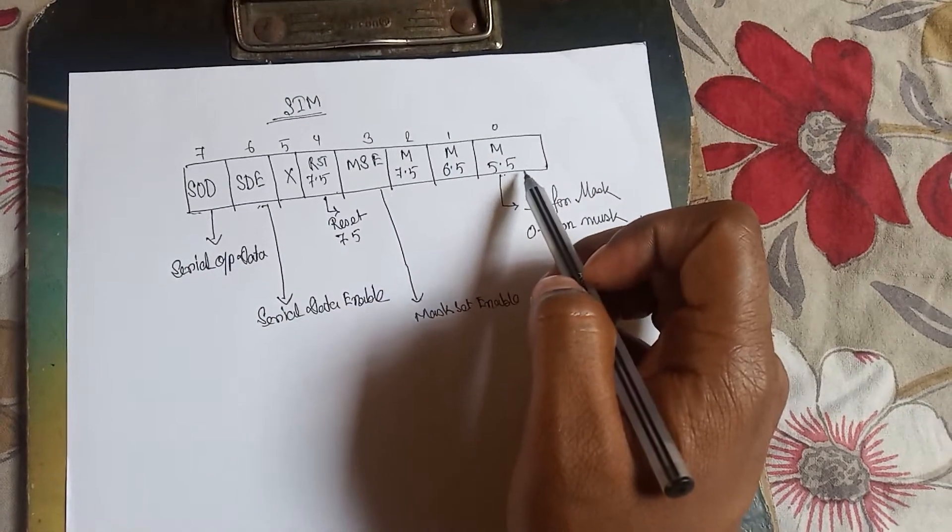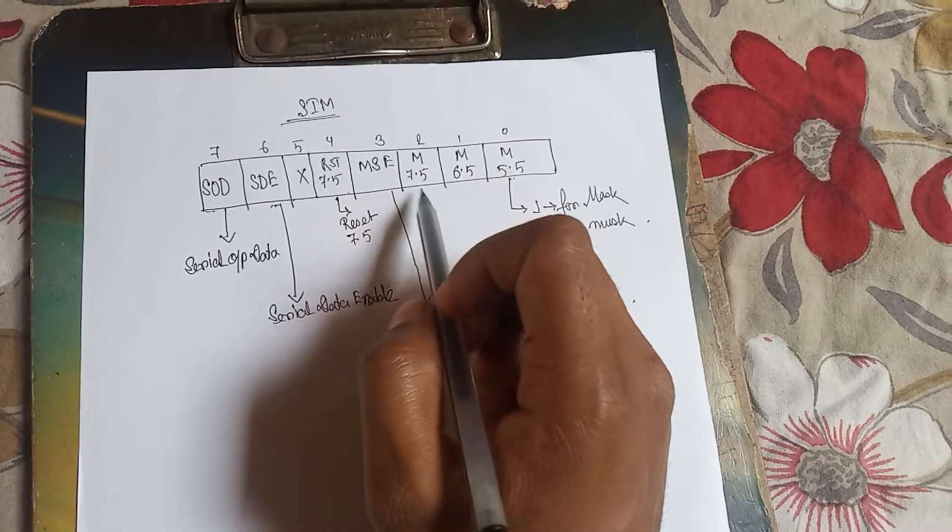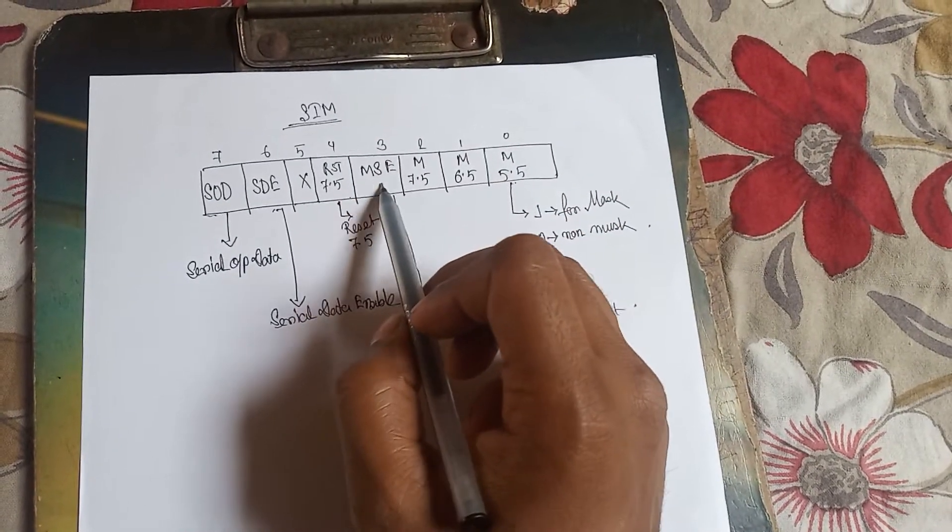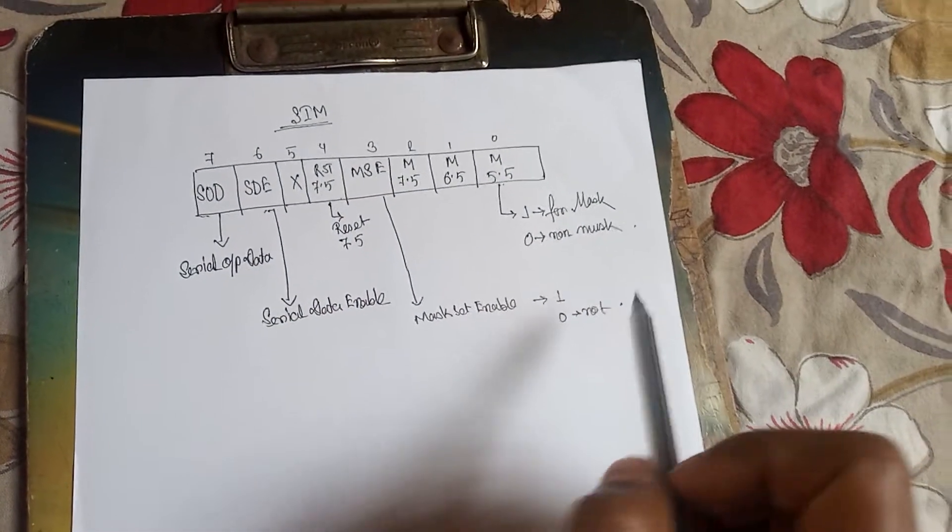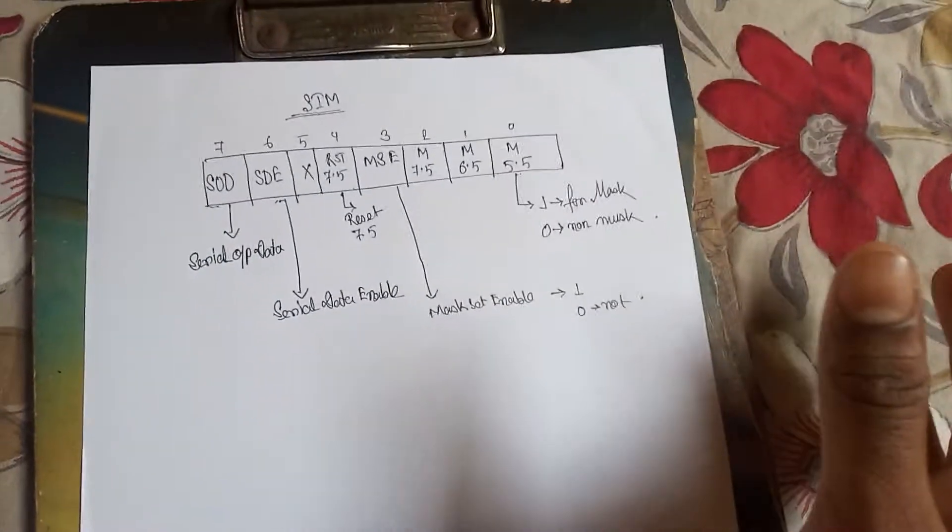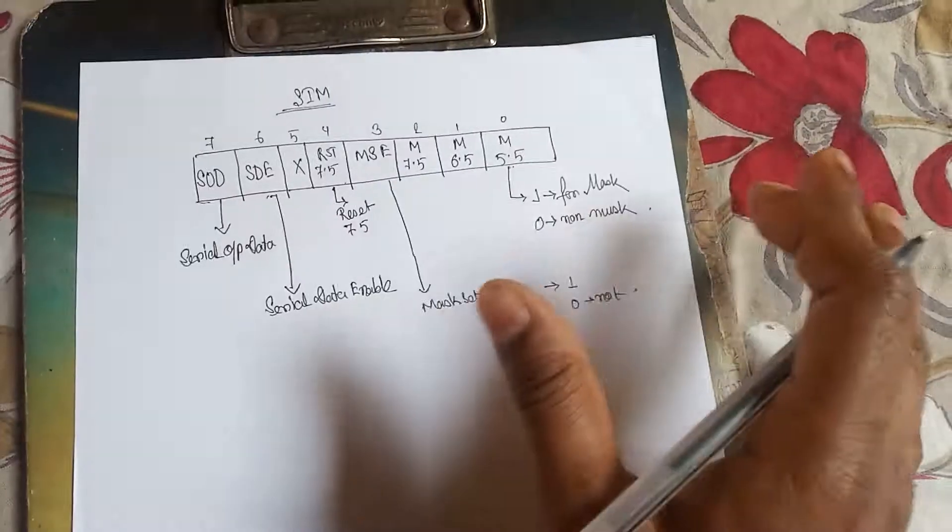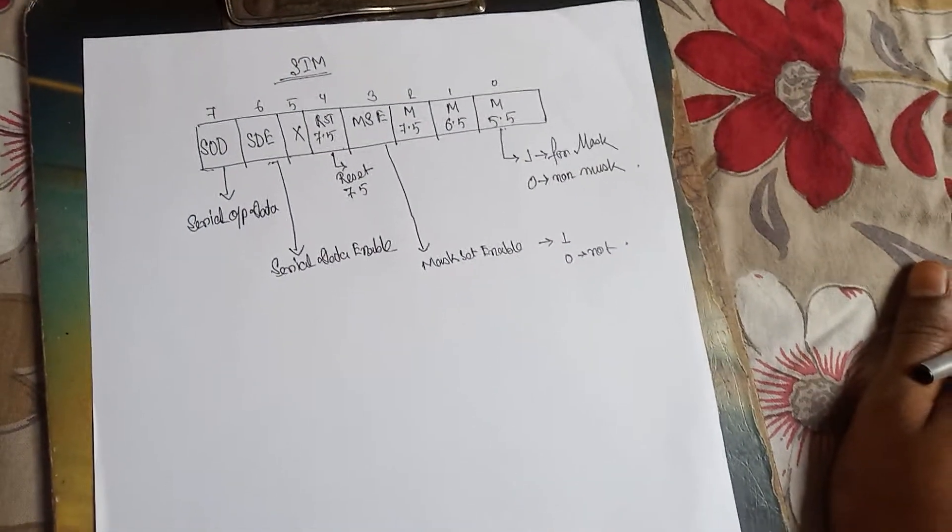So how SIM instruction will work? This is the basic register of a SIM instruction. It is an 8-bit register. Bit 0 is for mask 5.5, that is the interrupt 5.5 mask, 6.5 mask, 7.5 mask. And bit 3 is the main one, that is Mask Set Enable. If this goes to one, then only we can mask any interrupt. If it is zero, then we cannot mask any interrupt.